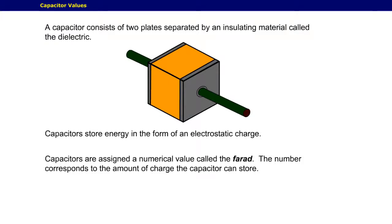Capacitors are assigned a numerical value called the farad. The number corresponds to the amount of charge the capacitor can store. The greater the farad value, the larger the charge it can store.